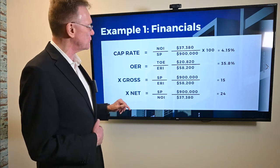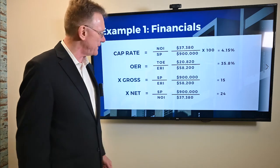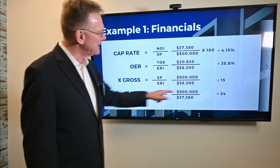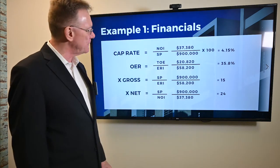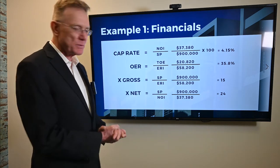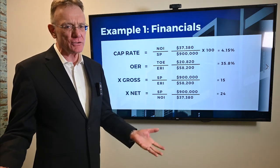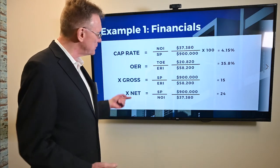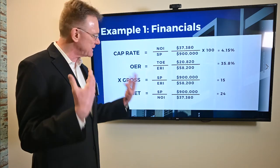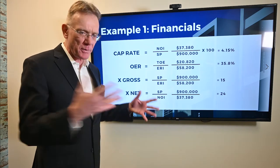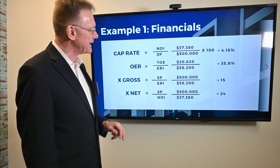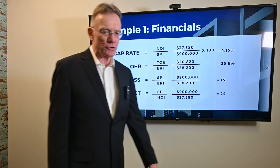For multiple times the gross: we purchased the property for $900,000 and the effective rental income was $58,000, giving us a number of 15. Or you can take $58,200 and multiply by 15 to get back to what we paid. The multiple times the net — which I actually prefer — eliminates the wastage of expenses and reflects the true income of the property: selling price divided by NOI, giving us a number of 24.